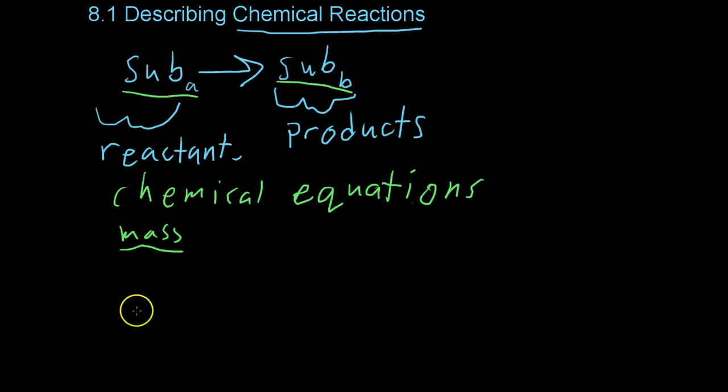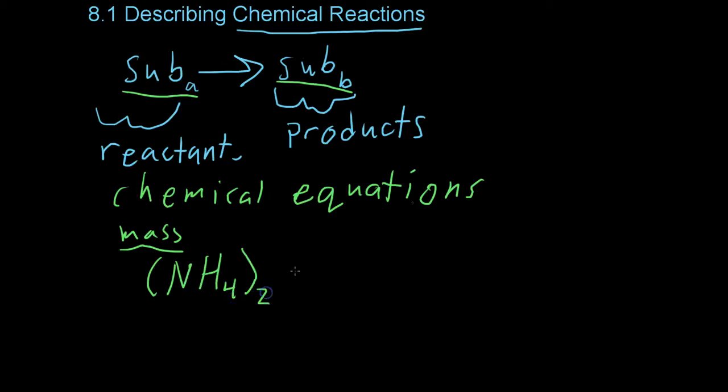For example, if we use a formula for ammonium dichromate, which is ammonium - you collectively use the polyatomic ion as though it were one element - and that's two chromium, and then you react it.